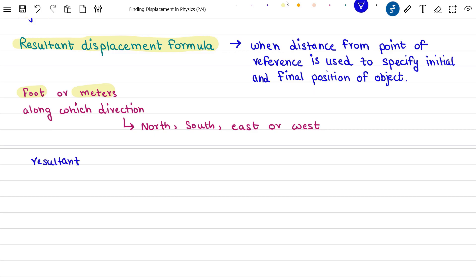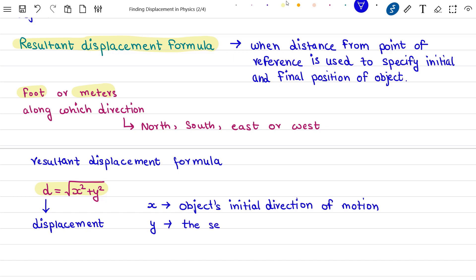The resultant displacement formula is given by the relation d = √(x² + y²), where d is displacement, x is the object's initial direction of motion, and y is the second direction in which the object is moving.